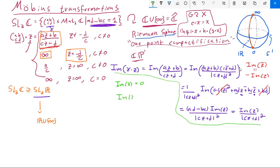We can also see that if the imaginary part of Z was greater than zero, well, we're only dividing by a positive number. So the imaginary part of gamma Z will remain larger than zero. And similarly, if the imaginary part of Z were less than zero, by the exact same argument, we can see the imaginary part of gamma Z remains less than zero.